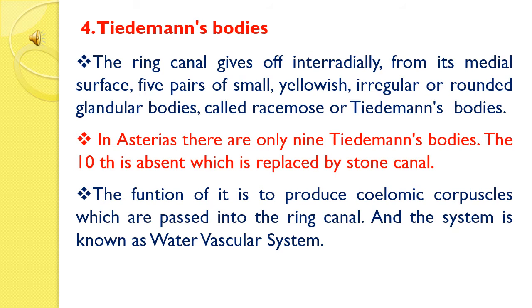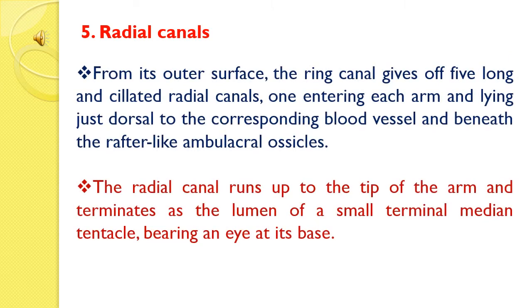The tenth is absent, which is replaced by the stone canal. The function of Tiedemann's bodies is to produce coelomic corpuscles, which are passed into the ring canal. From its outer surface, the ring canal gives off five long and ciliated radial canals, one entering each arm and lying just dorsal to the corresponding blood vessel and beneath the ambulacral ossicles. The radial canal runs up to the tip of the arm and terminates as the lumen of a small terminal median tentacle bearing an eye at its base.